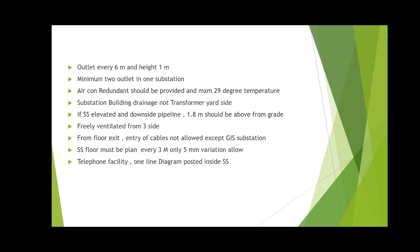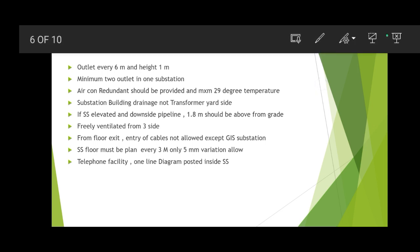For air return temperature: UPS and battery rooms are 25°C, but substation temperature up to 29°C is acceptable. Substation building drainage should not be on the transformer yard side — the drainage point must be on the opposite or any other side away from the transformer yard. If the substation is elevated and there is a pipeline below, it should be elevated up to 1.8 meters above ground, and that yard must be well ventilated. Floor-level entry or exit of cables is not allowed except for GIS substations.